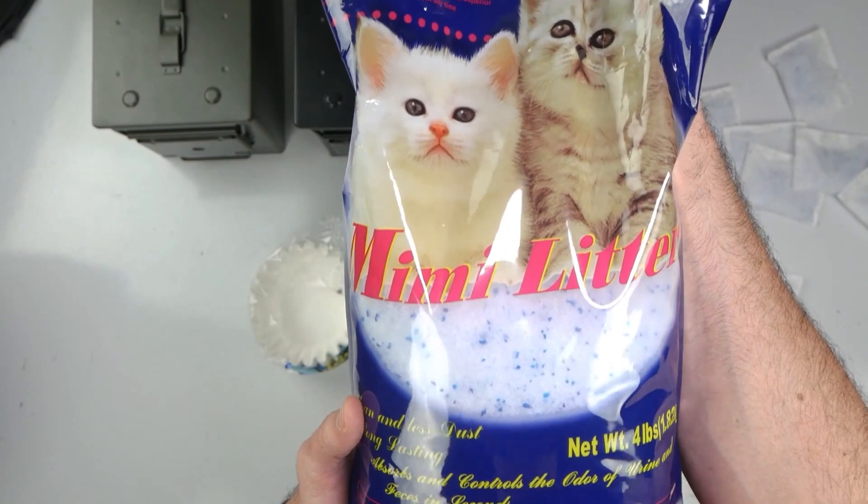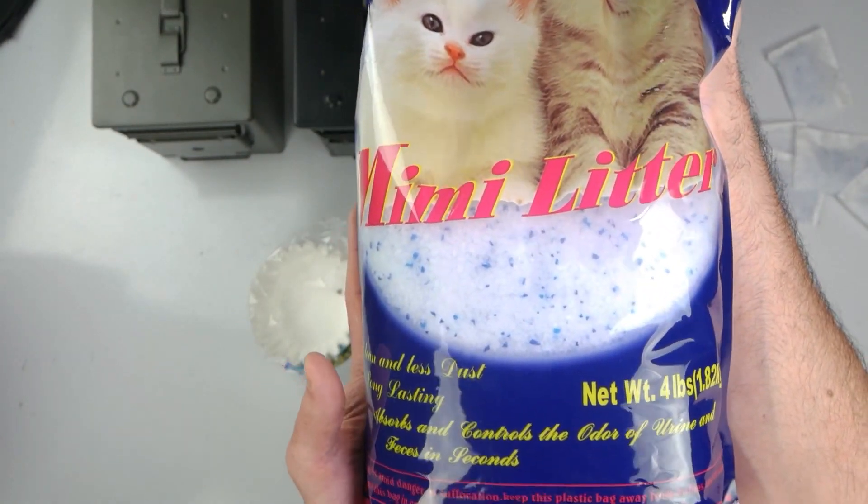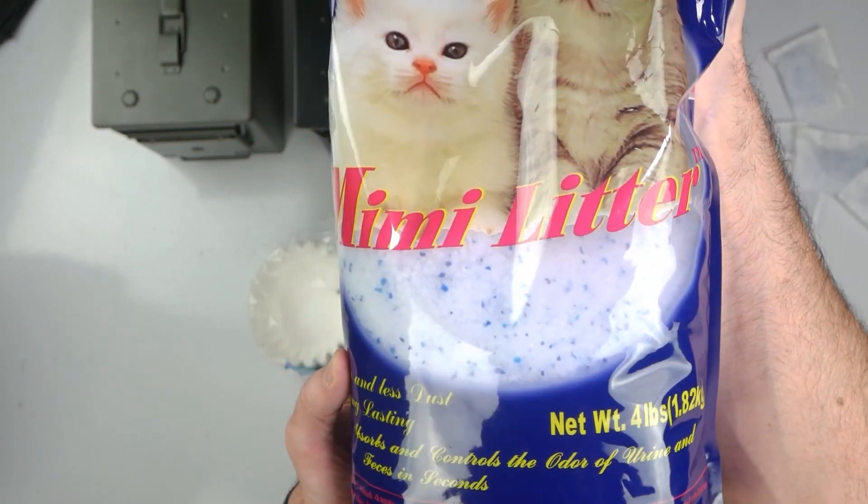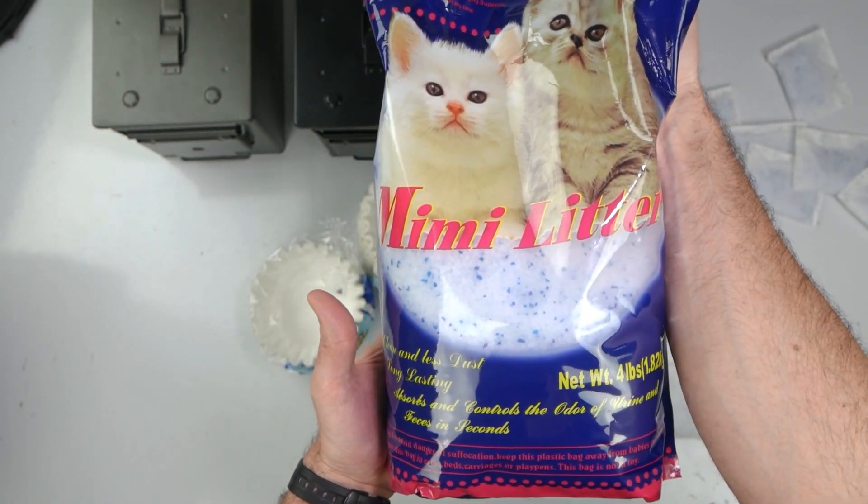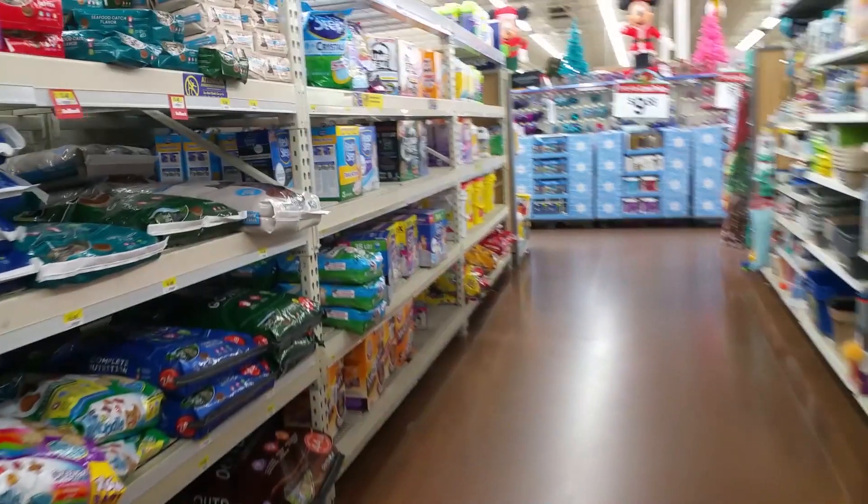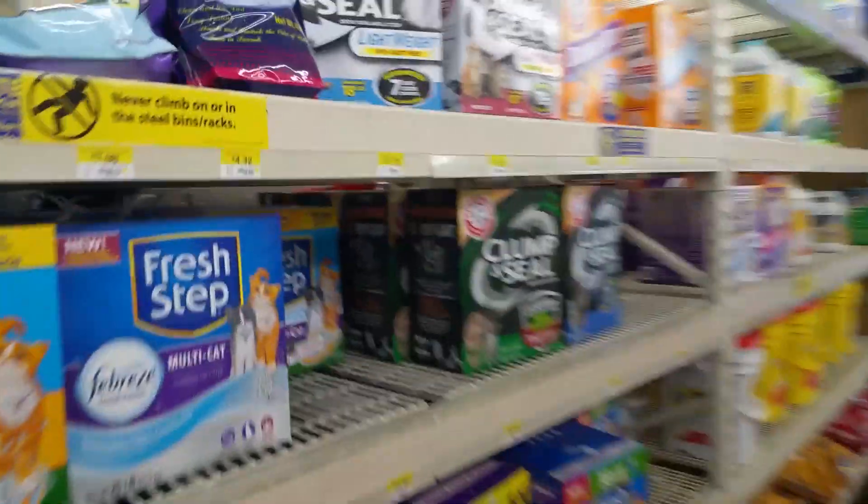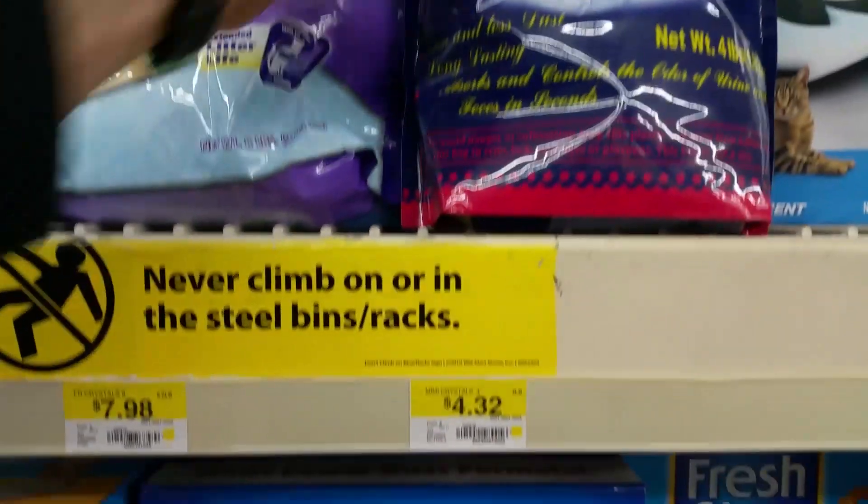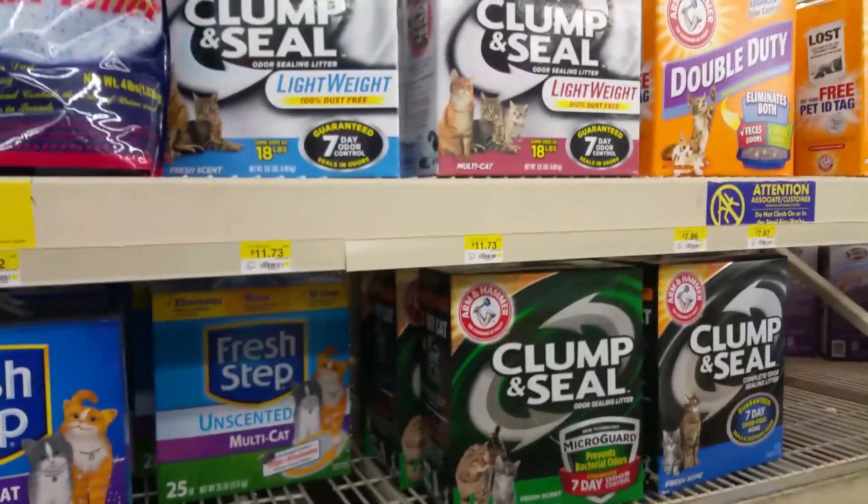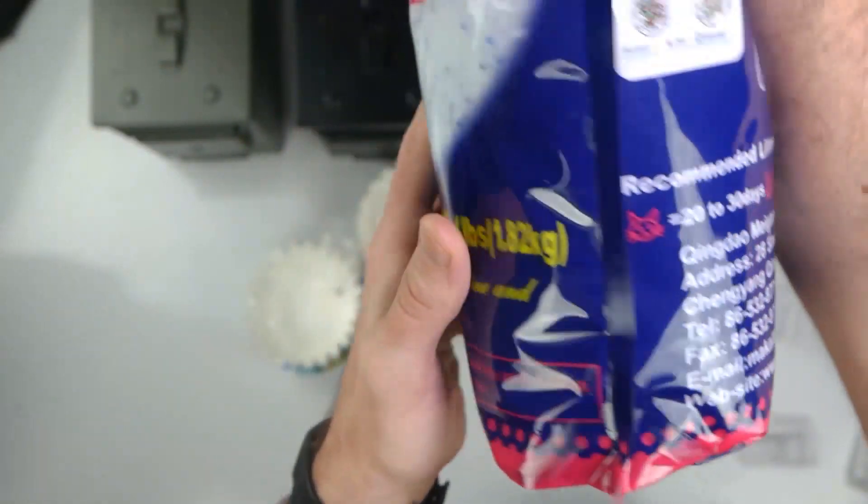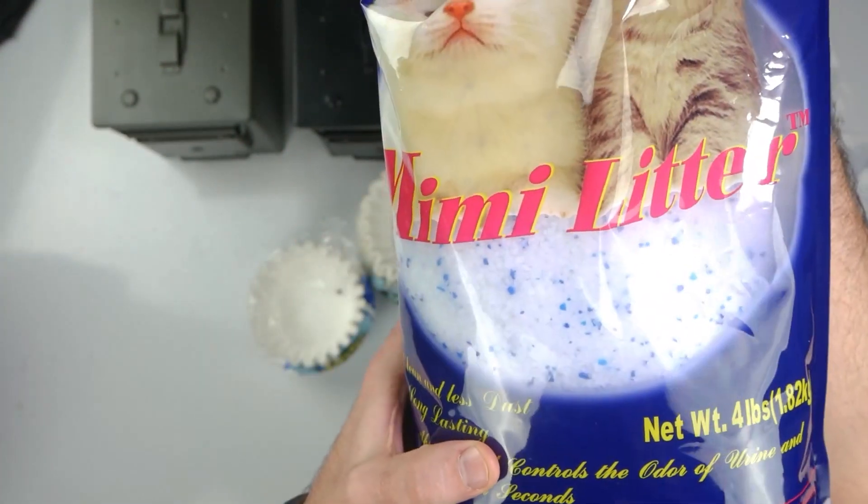Four pounds. This is Mimi litter. There were several other types, but this was about the cheapest per pound. This was $4.32. This is just in the regular cat food aisle where the kitty litter is. So this is just silica gel. It's what comes in those pre-made little packs.